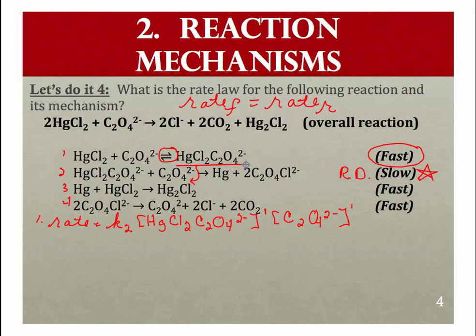This mercury chloride oxalate ion is formed and then disappears. Substances that form and disappear are intermediates, and they cannot show up in our rate law expression. I need to find something to substitute in for that, and that's where that fast equilibrium is going to come into play.